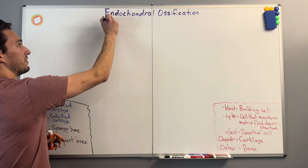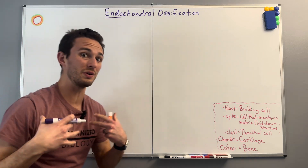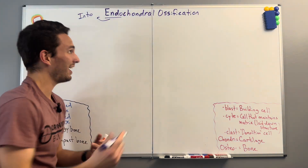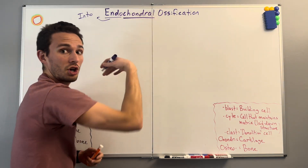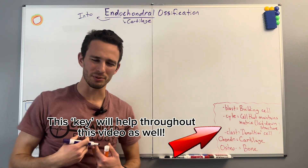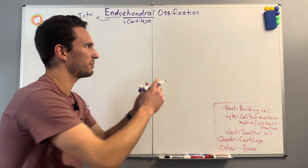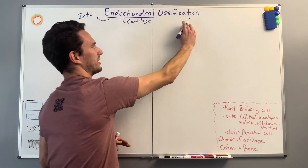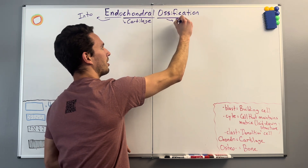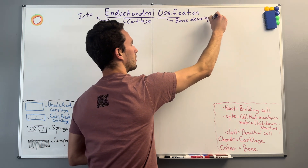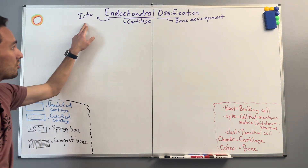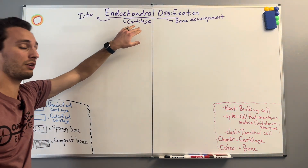First, we've got that prefix endo, and that just refers to inside or into. Chondral always refers to cartilage — we can think of cartilage as kind of that hard plastic, like in our rib. Then we've got the big word ossification, and ossify — that prefix means bone growth or development. So there we have it: we're going to have bone development happening into a layer of cartilage.